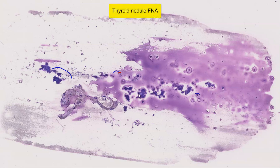This is an air dried smear from a thyroid FNA, and this is a left thyroid nodule. At low magnification, we can see that the cellularity is relatively low, and that there is quite a lot of this purplish colloid in the background. There are also some empty spaces, as you can see here.